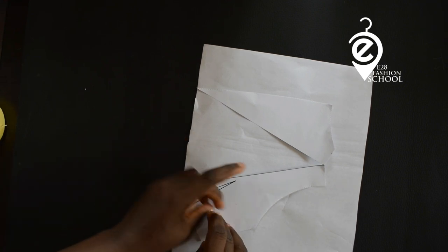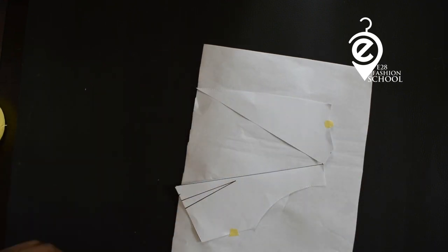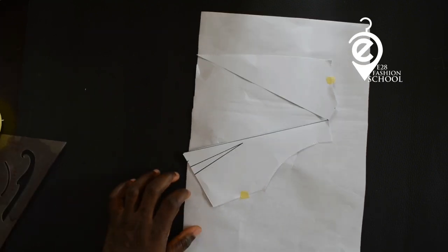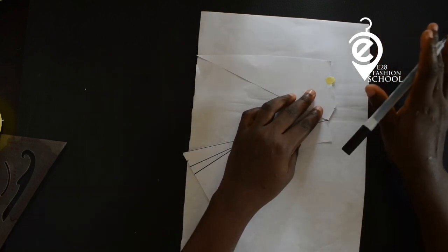Then you're going to mask it down using your masking tape. Can you see it? All right, so the next thing you want to do is transfer this pattern into the new paper.